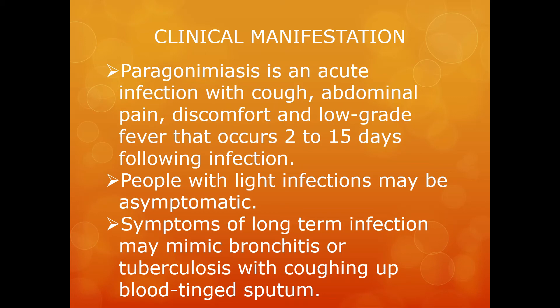Paragonimiasis is an acute infection. Symptoms that are usually present include cough, abdominal pain and discomfort, as well as a low-grade fever, apparent between 2 to 15 days following infection. People with light infections however are without symptoms, and individuals with long-term infections may display clinical symptoms similar to bronchitis or tuberculosis, with coughing up of blood-tinged sputum.